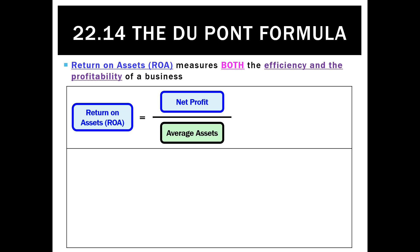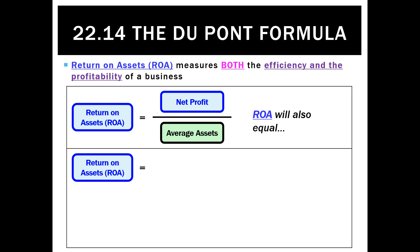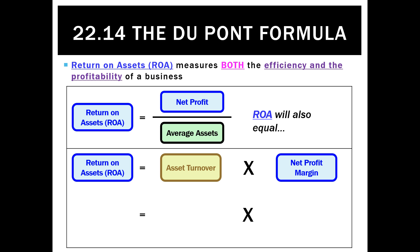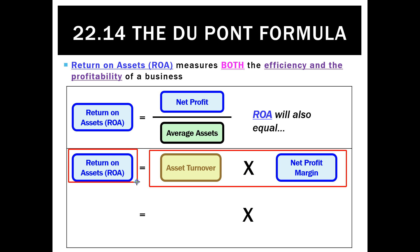The DuPont formula is very similar because what it does is it looks at both the efficiency and the profitability of a business. It starts on the premise that return on assets is a really important ratio, and we calculate it by net profit divided by average assets. However, there's also a mathematical relationship between return on assets and an asset turnover ratio multiplied by net profit margin, whereby if we multiply together asset turnover and net profit margin for a business it will always equal its return on assets.